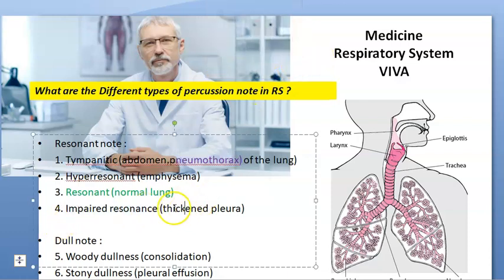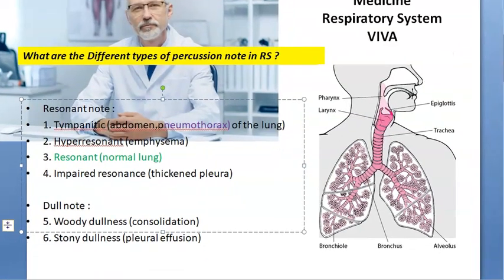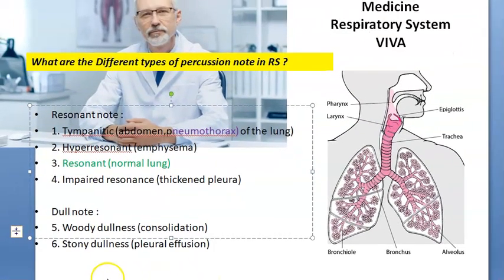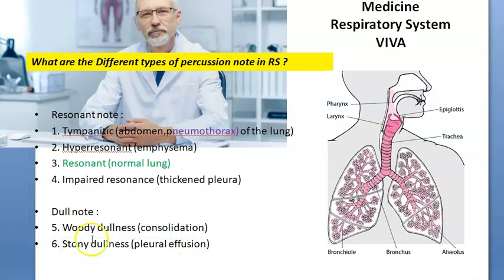Impaired resonance, we can see when the pleura is thick. Dull note we will get if there is pleural effusion — stony dull. Woody dull we get for consolidation, like pneumonia consolidation.